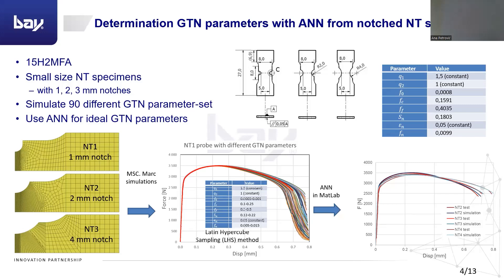Thereafter, these results were used for the training of the artificial neural network. Here, the GTN parameters Q1 and Q2 and the standard deviation were fixed — those which changed totaled five parameters in the optimization. The Bayesian optimization method was used, and also due to the characteristic of the curve, the displacement values were taken for given force values. These were able to determine the GTN parameters for this given material, which was the 15H2MFA material.